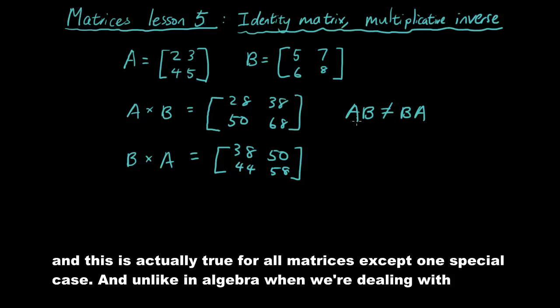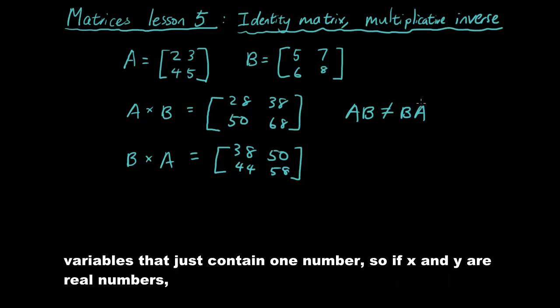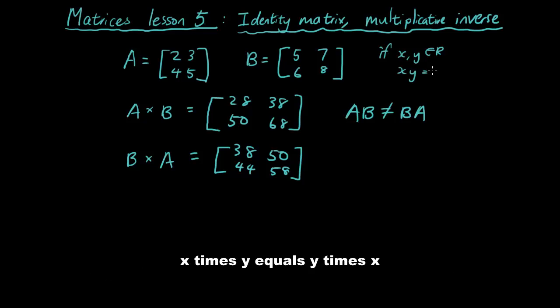And this is actually true for almost all matrices except one special case. So unlike normally in algebra when we are dealing with variables that just contain one number. So if A and B, if X, Y are real numbers, X times Y equals Y times X, right?